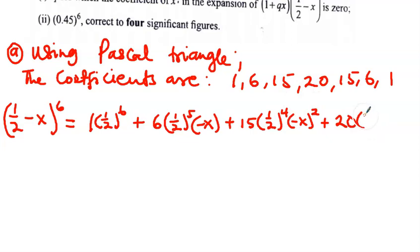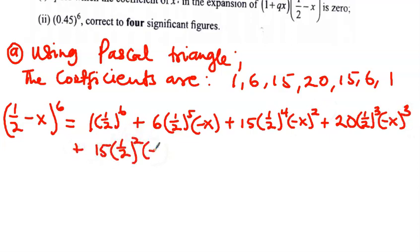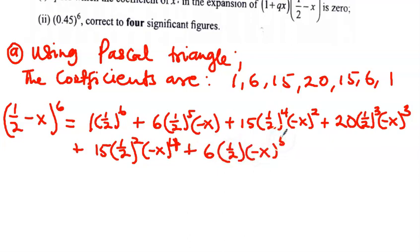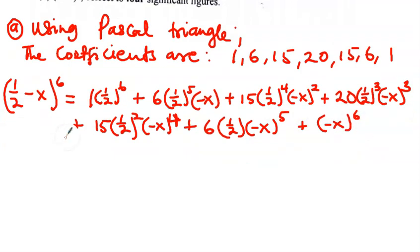Then plus 20 times (1/2)^3 times (-x)^3. Then plus 15 times (1/2)^2 times (-x)^4. Then plus 6 times (1/2)^1 times (-x)^5. And finally plus (-x)^6. Now let's simplify.